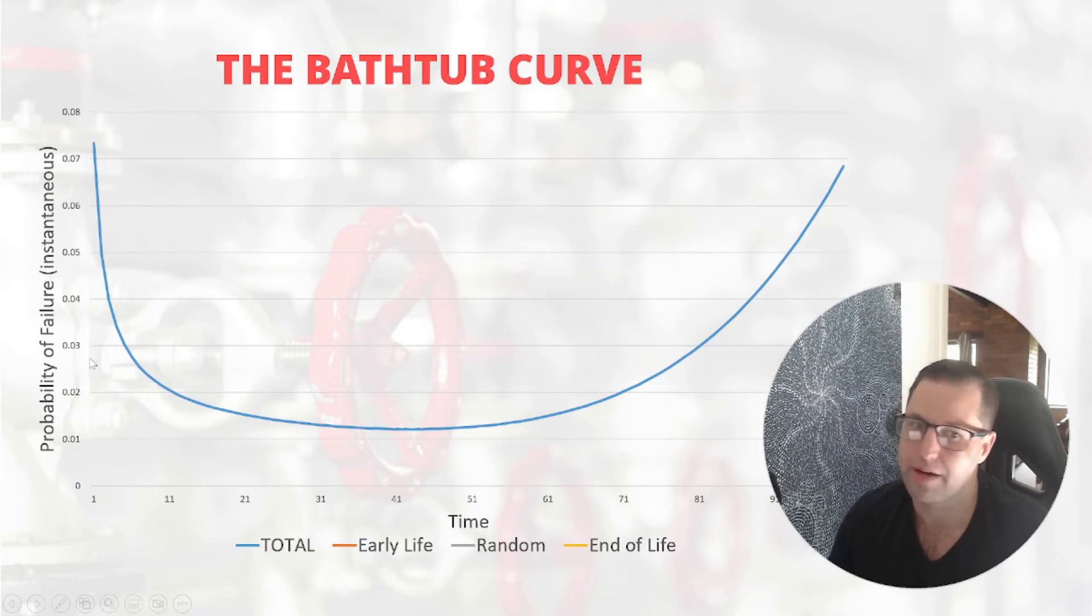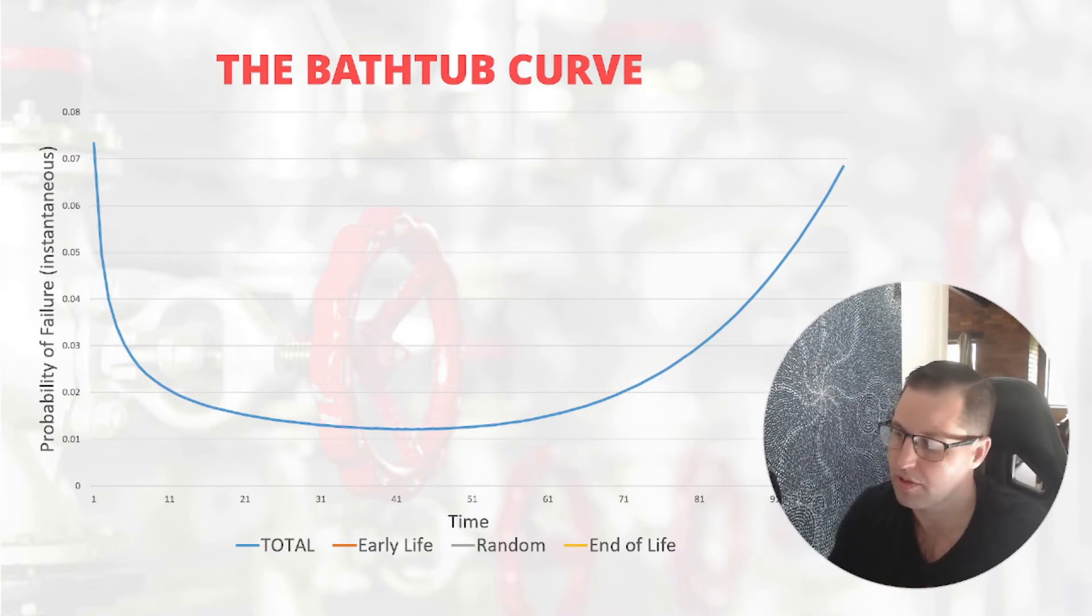Infant mortality describes the increased or above average failure rate or mortality rate of children between when they're born and when they're one or two years old. This describes the same sort of thing as the early life failures.